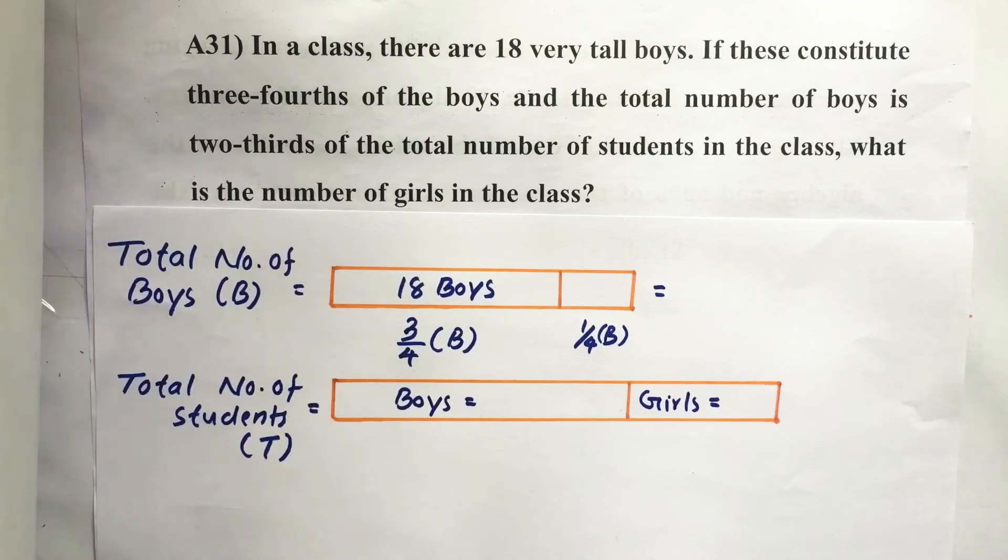In a class there are 18 very tall boys. If these constitute three-fourths of the boys and the total number of boys is two-thirds of the total number of students in the class, what is the number of girls in the class?